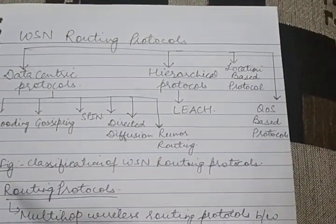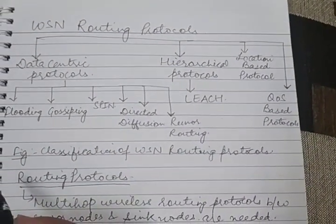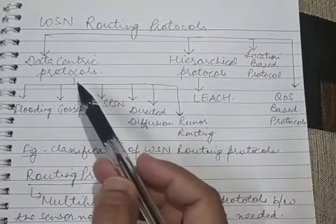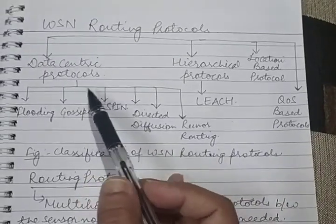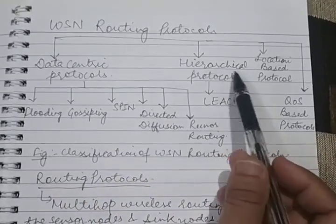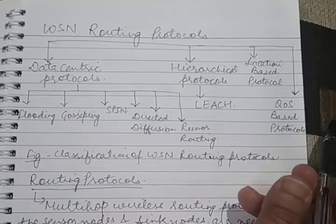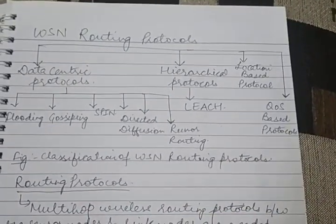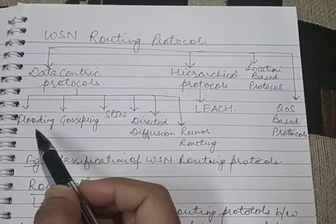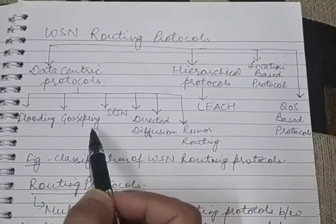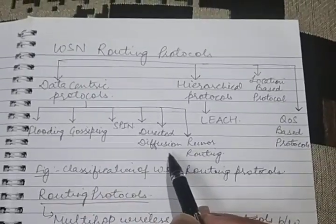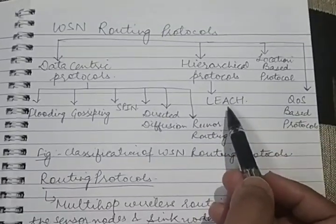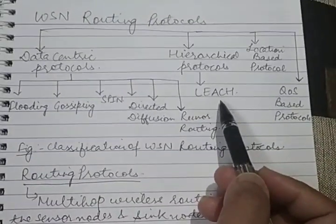Hi students. In this lecture I will talk about the routing protocols for wireless sensor networks. They are classified into various categories like data centric protocols, hierarchical protocols, location based protocols, and quality of service based protocols. Data centric protocols are further divided into flooding, gossiping, SPIN, directed diffusion, and rumour routing. The most popular hierarchical protocol is LEACH.